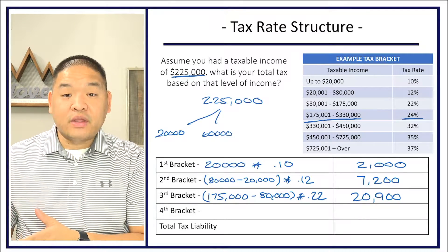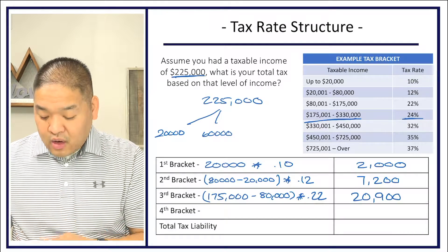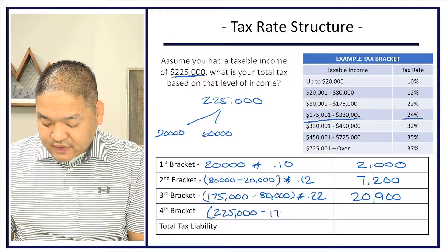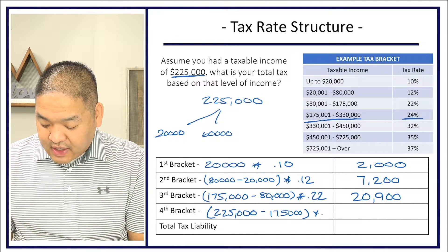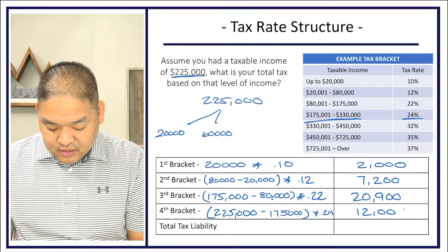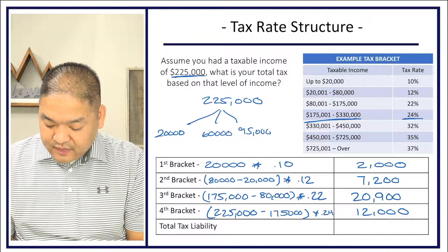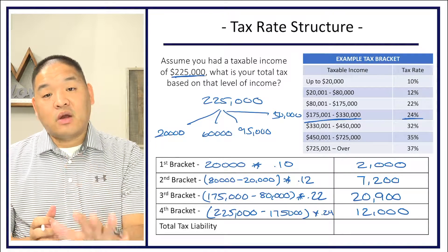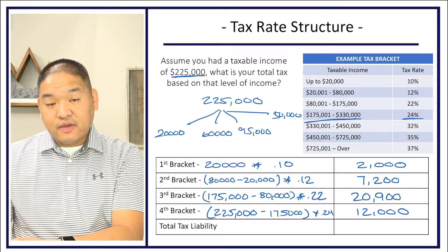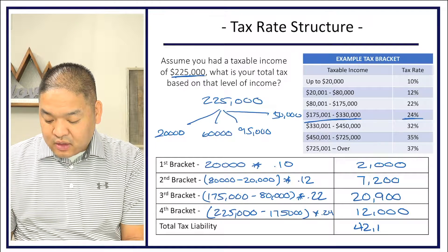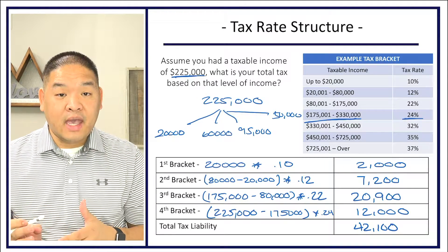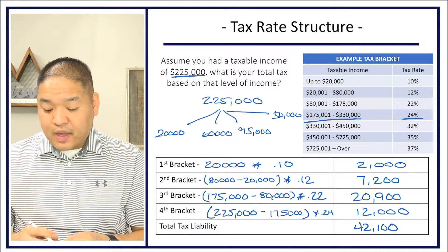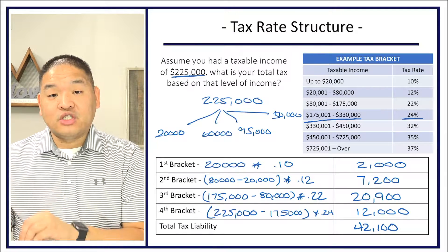Instead, we take our actual income of $225,000 and subtract $175,000, giving us $50,000, and multiply that by 24%, which gives us $12,000. We've now accounted for all $225,000 — some taxed at lower brackets, some at higher. Adding all four results together: $2,000 + $7,200 + $20,900 + $12,000 gives us a total tax liability of $42,100. This is much lower than simply multiplying $225,000 by 24%.